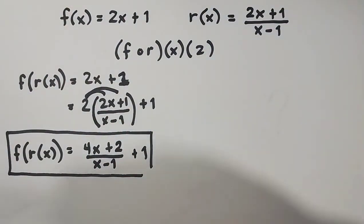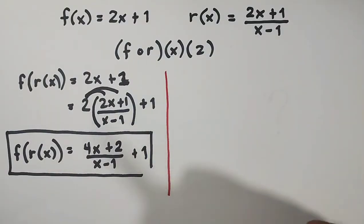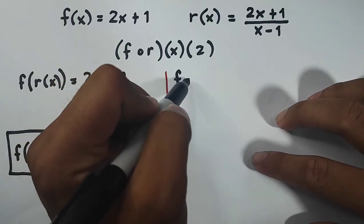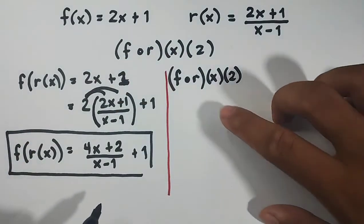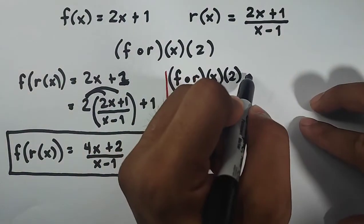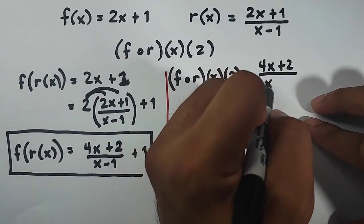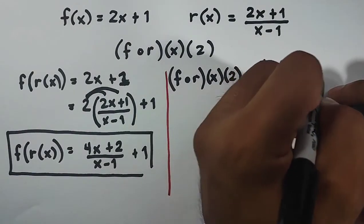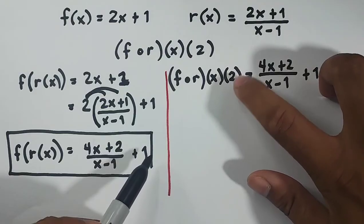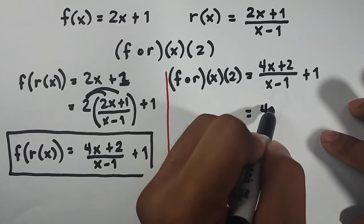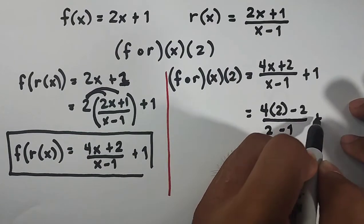Next naman natin, ay yung meron ng input na ganito. So, let's write. We have this f of r of x of 2. So dito, gamitin natin ito. It will become 4x plus 2 over x minus 1, sorry, x minus 1 plus 1. And, kung mapansin nyo, meron tayong x na numerator and meron tayong denominator sa x. Papalitan natin sya ng 2. So it will become 4 times 2 minus 2, over 2 minus 1 plus 1.